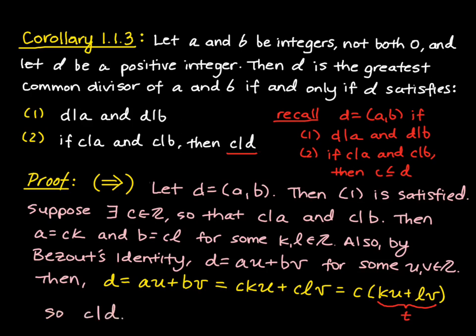And so we've proved the forward direction. So the second thing we want to do is assume that these two criteria are satisfied and prove that that implies that D has to be the greatest common divisor of A and B. And so I will draw an arrow that indicates that we're moving in the backwards direction this time.